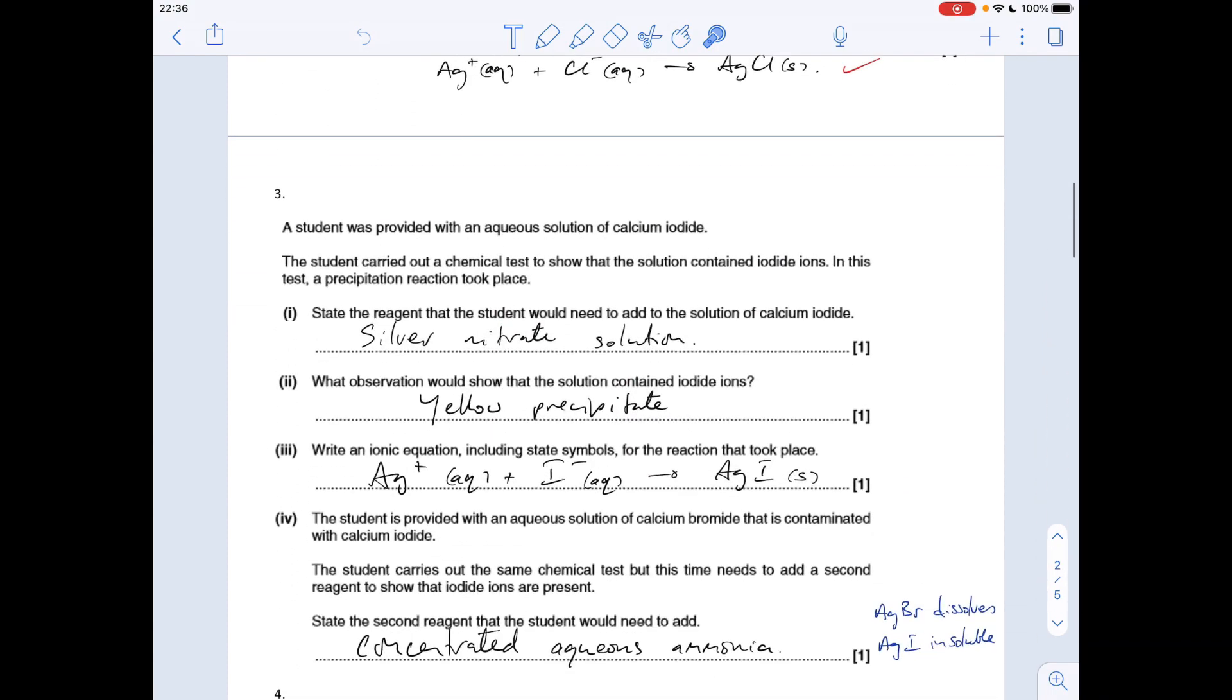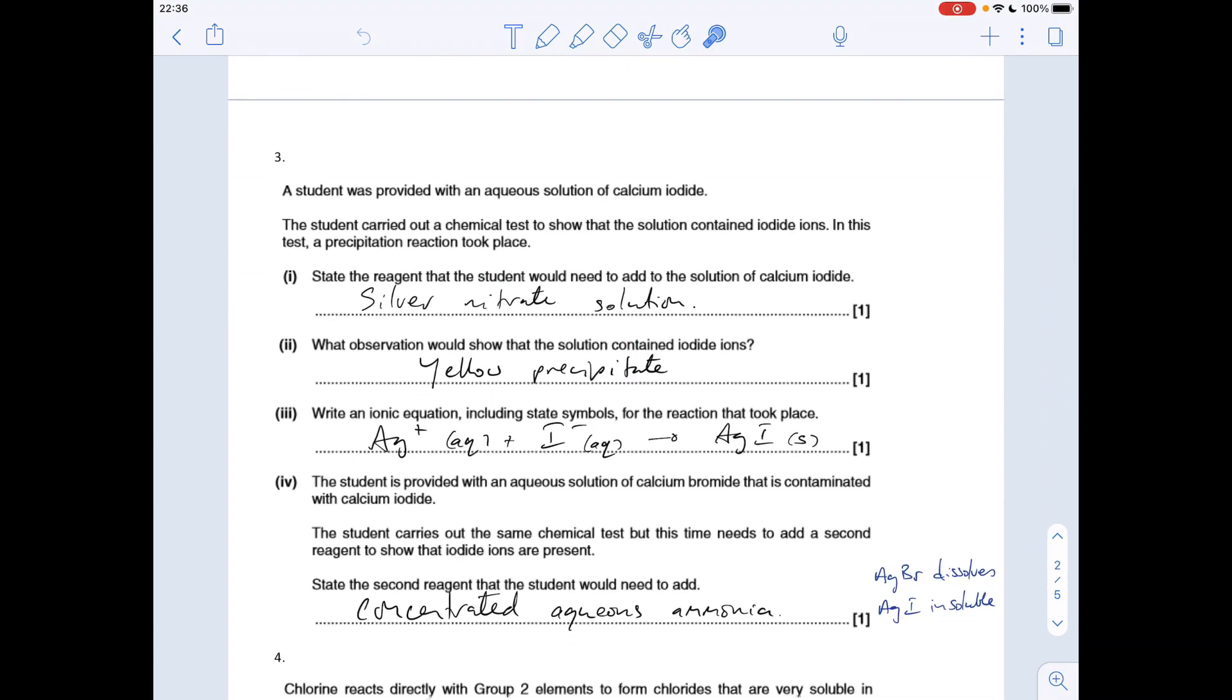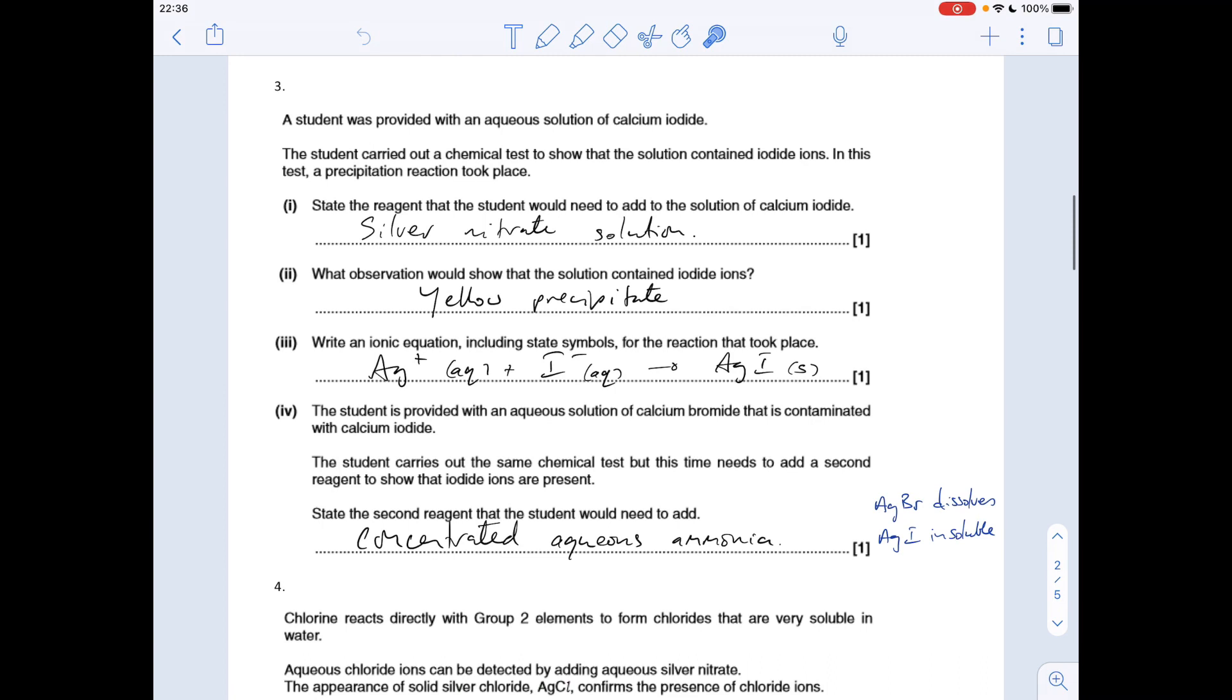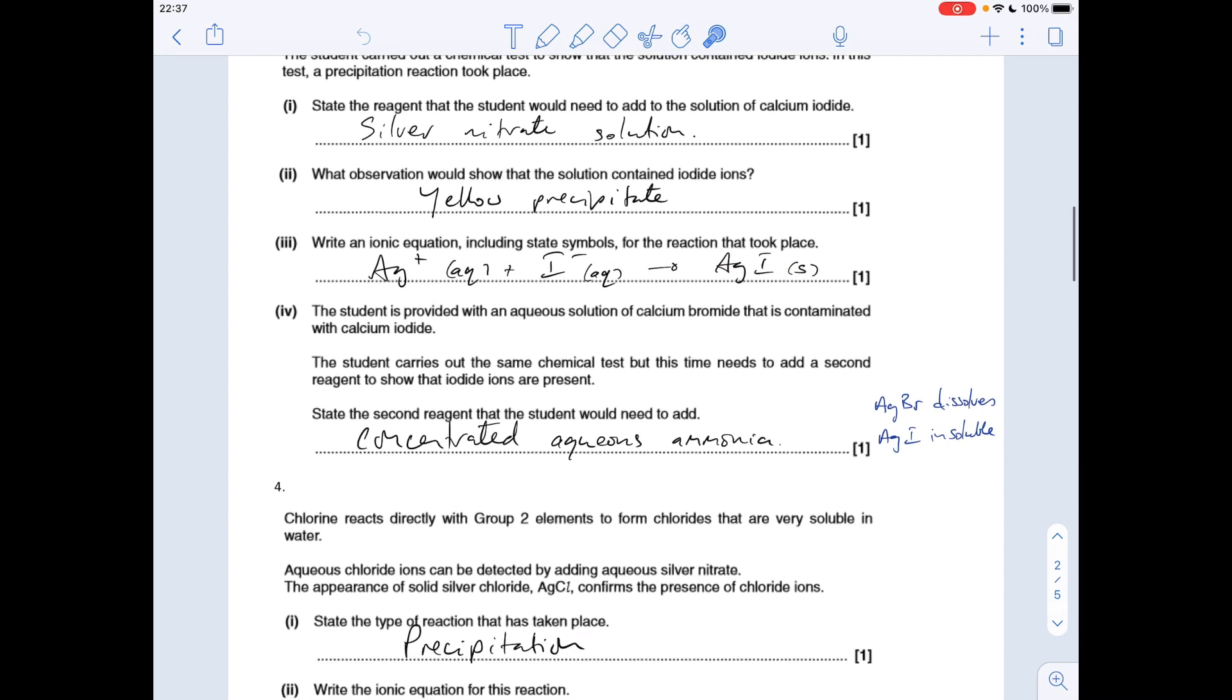Question three: lots of little one mark questions now. State the reagent the student would need to add to the solution of calcium iodide: silver nitrate solution. What observation would show that the solution contained iodide ions: yellow precipitate. There's the ion equation for that reaction.